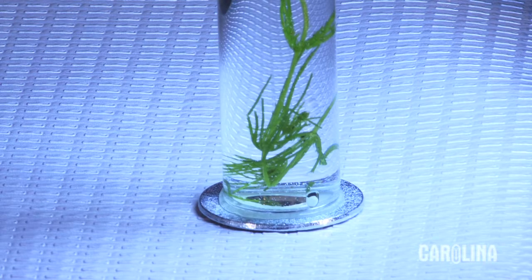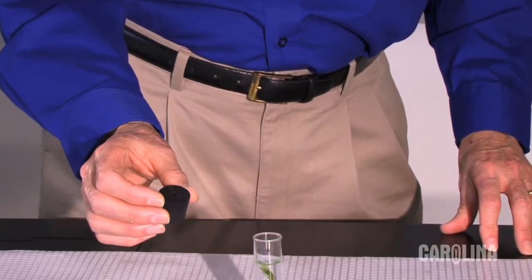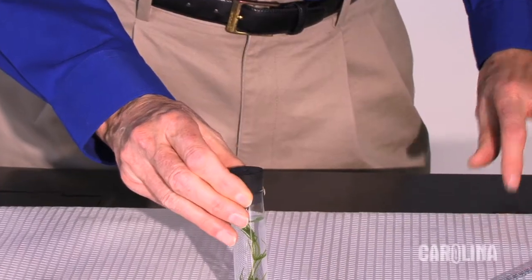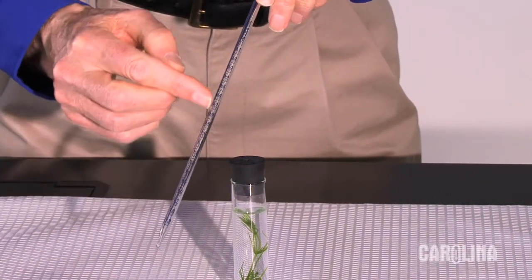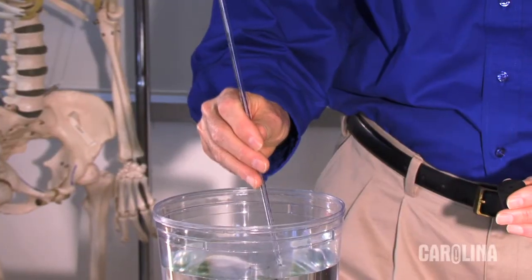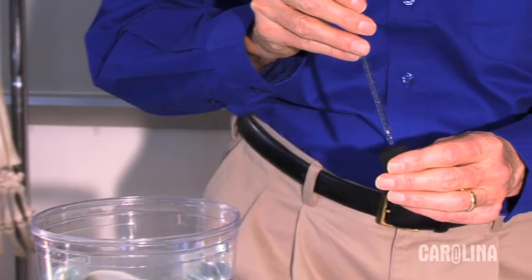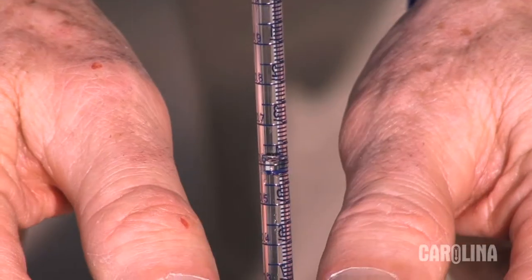We can ramp this up to make it still more quantitative. You will need a one-hole stopper that fits the tube and a pipette graduated to hundredths of a milliliter. Dip the tip into water and insert it into the stopper. Press the stopper into the tube.